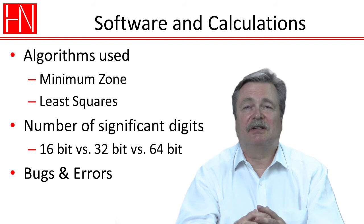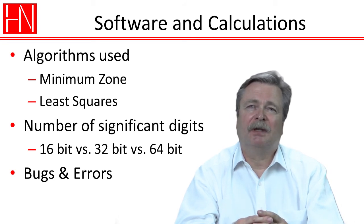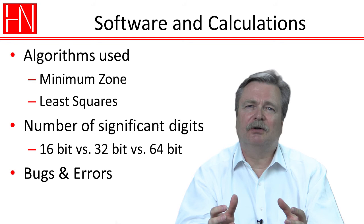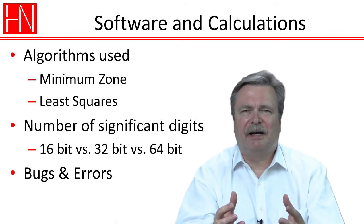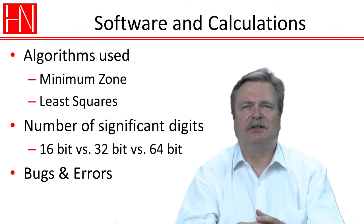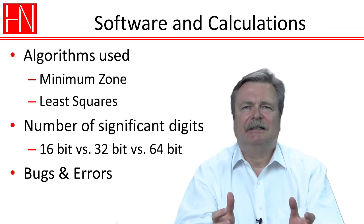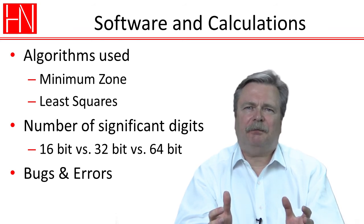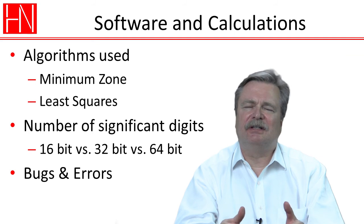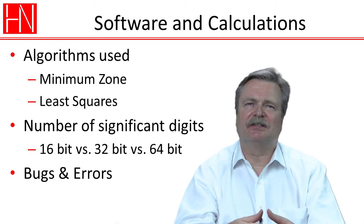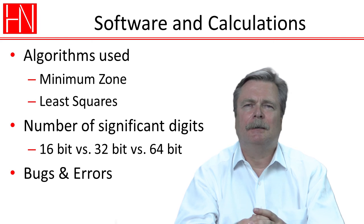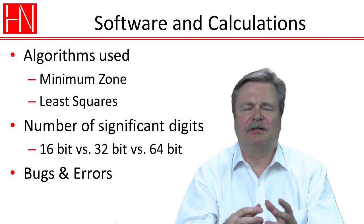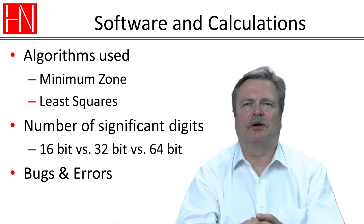And then, of course, there can be bugs and errors in software. Usually we don't consider errors as part of the uncertainty calculation, because the uncertainty goes with the process, and bugs and errors are usually not considered part of the process. But it's something to consider as part of the uncertainty estimation and the review of the measuring process.